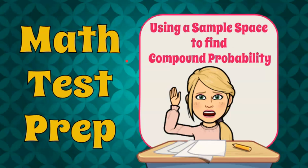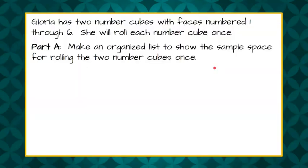Hi, welcome to Math Test Prep, where today we're going to answer a standardized math test question using a sample space to find compound probability. Gloria has two number cubes with faces numbered one through six. She will roll each number cube once. Part A of our open response question asks us to make an organized list to show the sample space for rolling the two number cubes once.